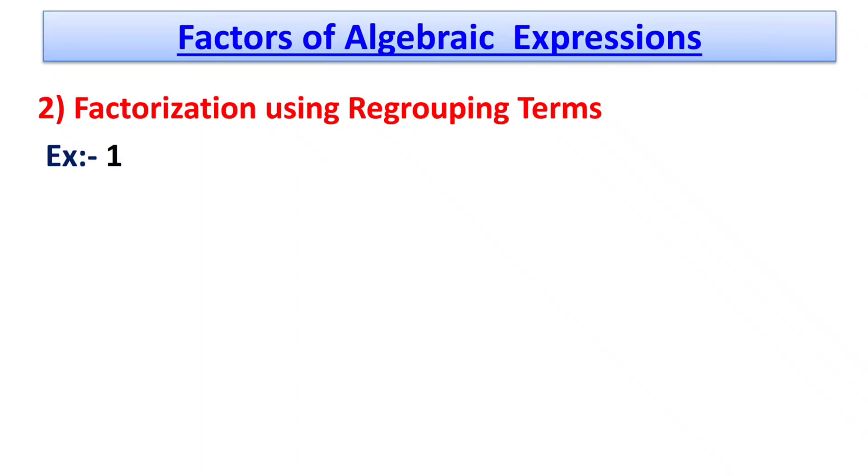Here the given problem is 12a + b - ba - 12. After rearranging these terms, we have 12a - 12 - ab + b.